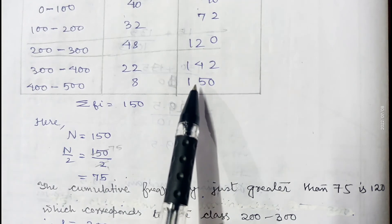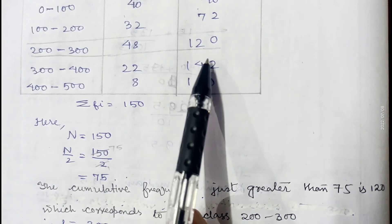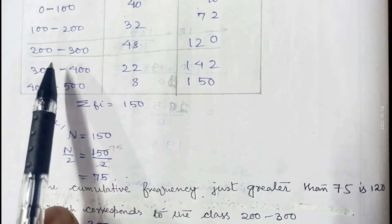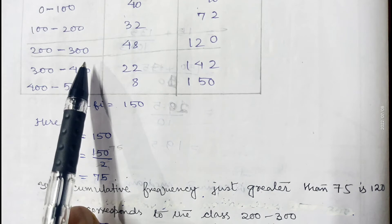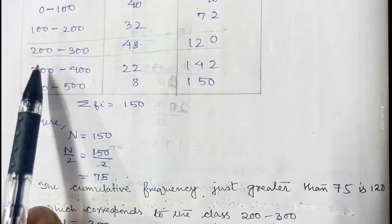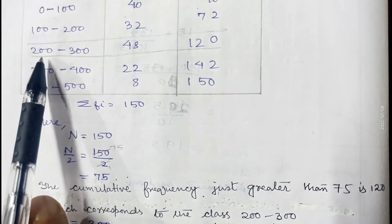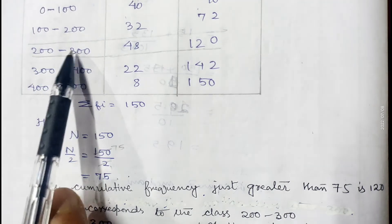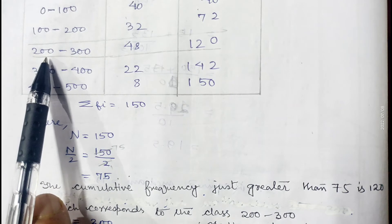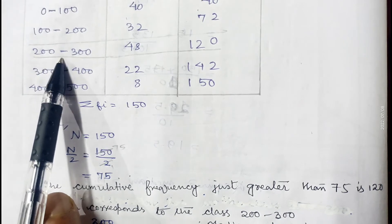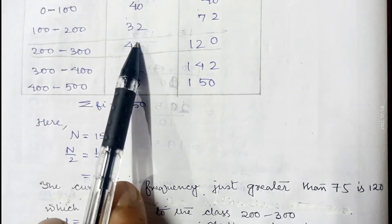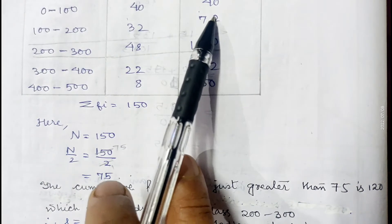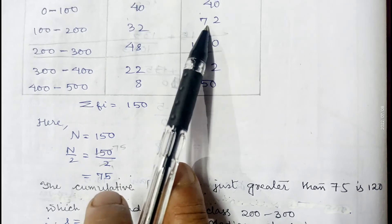The cumulative frequency just greater than 75 is 120, which corresponds to class 200 to 300, so 200 to 300 is the median class. The lower limit of the median class l is 200. The width of the class h is 100 (since 300 minus 200 is 100). The frequency of the median class f is 48.